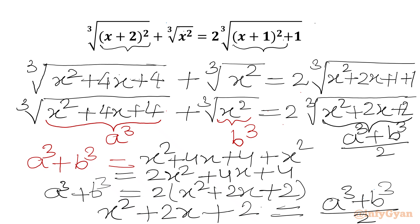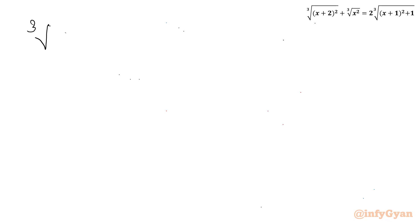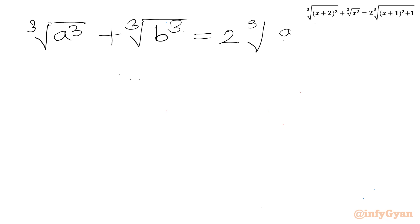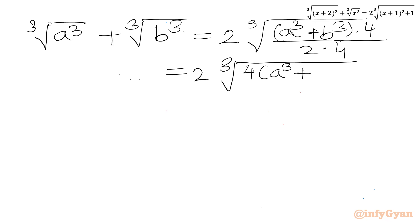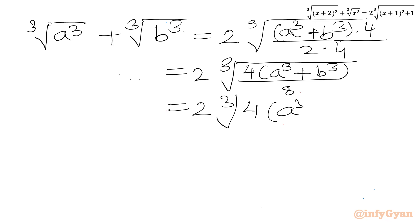Let us write our equation. I will write: cube root of a³ + cube root of b³ equal to 2 times cube root of (a³ + b³) / 2. Now we will multiply numerator and denominator by 4, so the RHS becomes 2 times cube root of 4(a³ + b³) / 8, or equivalently 2 times cube root of 4(a³ + b³) over cube root of 8.